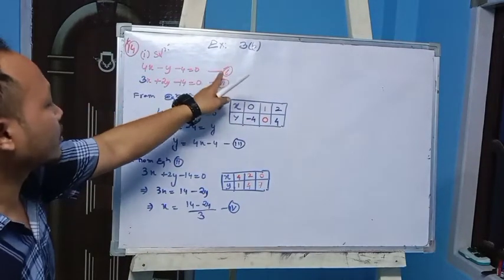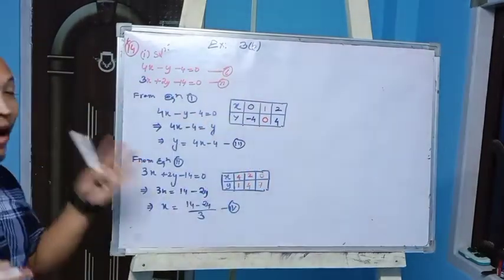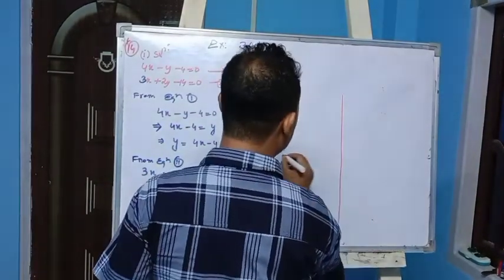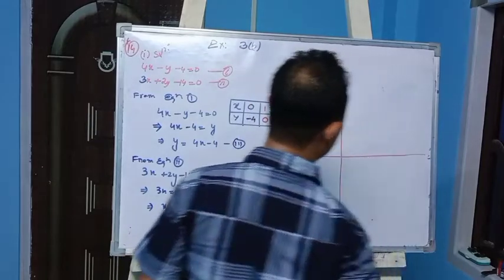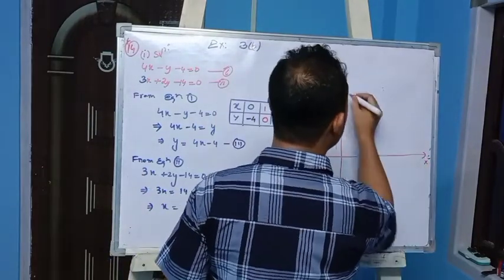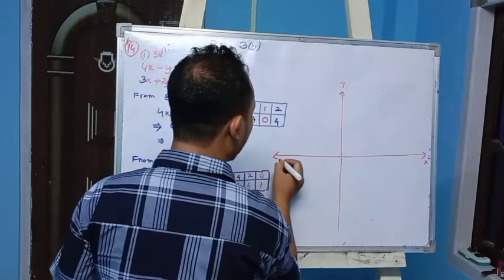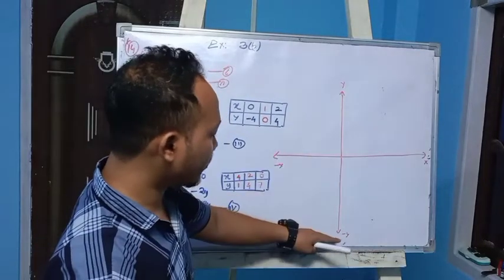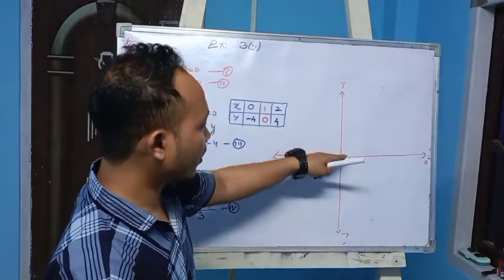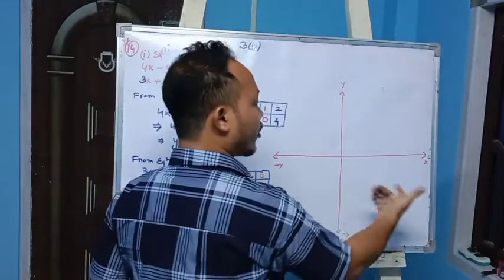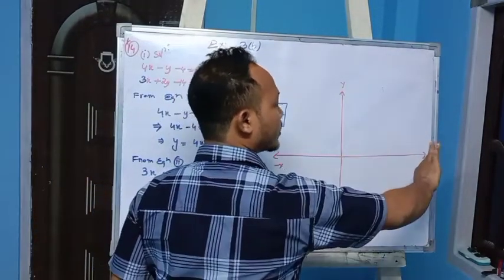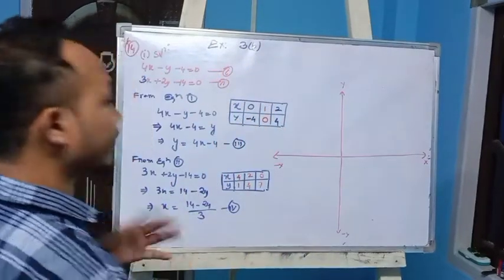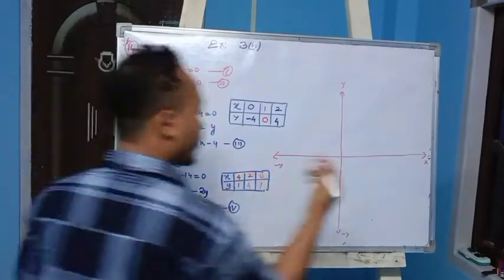Now I am going to draw the graph. I will draw the axes: this is your X-axis, this is your Y-axis, this is minus X, and this is minus Y. All negative values will come downward, all positive Y values go upward. Positive X values go to the right side, negative X values go to the left side.